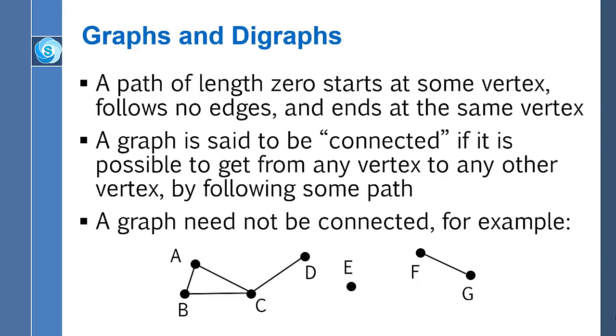This is one graph that has one, two, three, four, five, six, seven vertices, and it has one, two, three, four, five edges. And it is clearly disconnected. For example, there's no way to get from vertex A to vertex E along a path. I say again, we want to think of this as one single graph, but we would say that this graph is subdivided into three connected components.